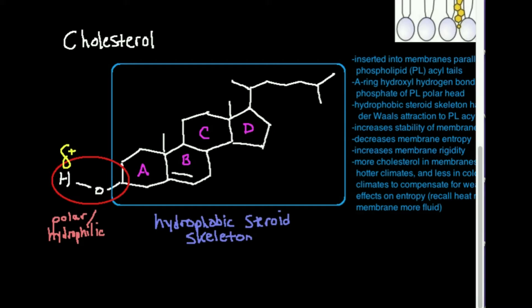Cholesterol overall has three main functions. It can be converted into molecules called steroids, which are hormones like testosterone and estrogens. It can also be converted into bile salts or bile acids, which are molecules that help to emulsify the fats that you eat in your diet when they're in the small intestine.